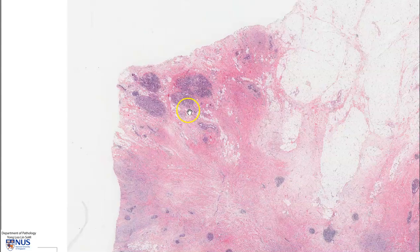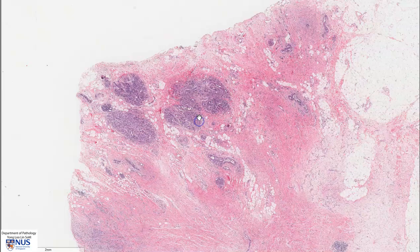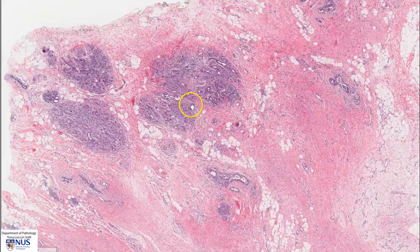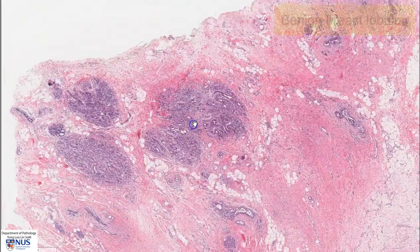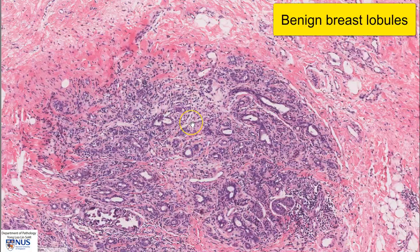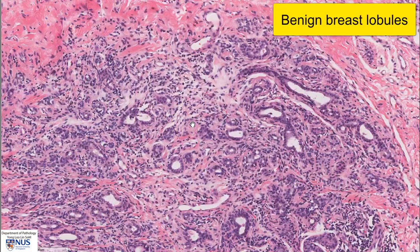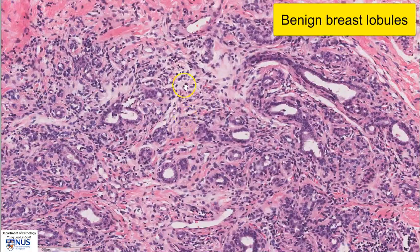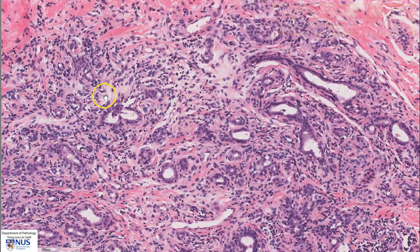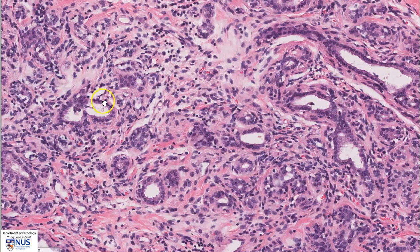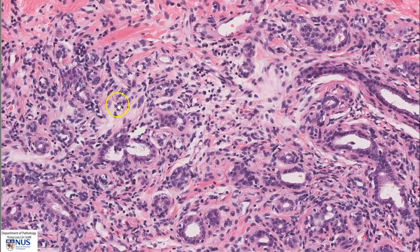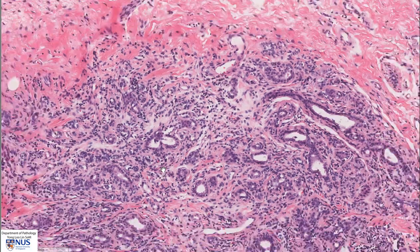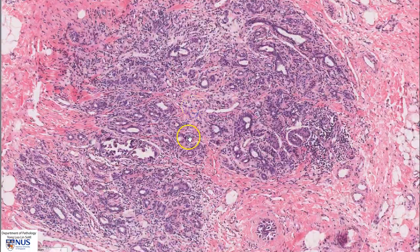We can see that there are some benign breast lobules here, and there is some inflammation and lymphoid infiltrates within the lobules, within the intralobular stroma, but there is no evidence of tumor here.